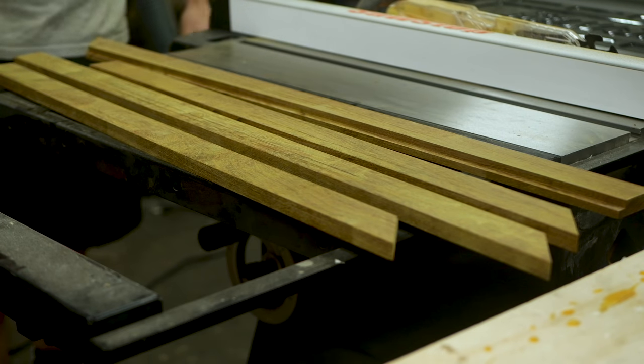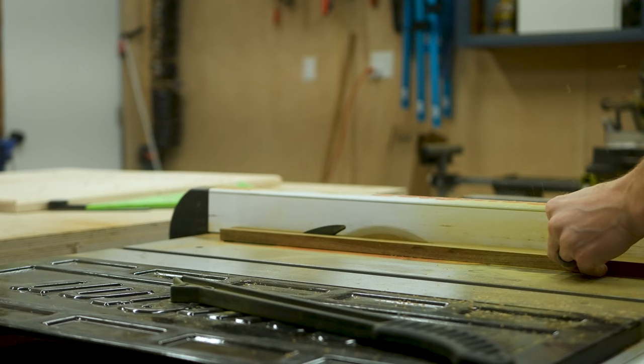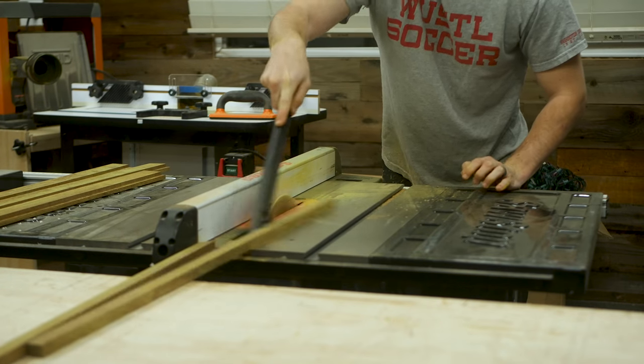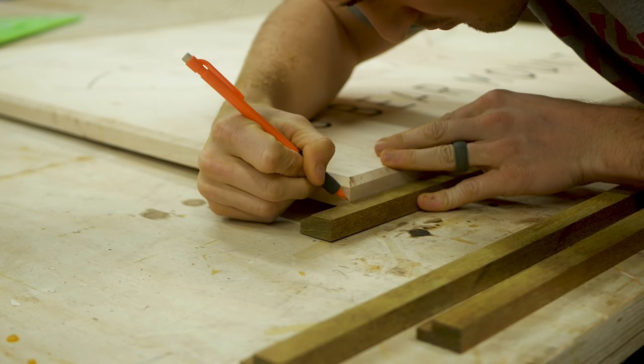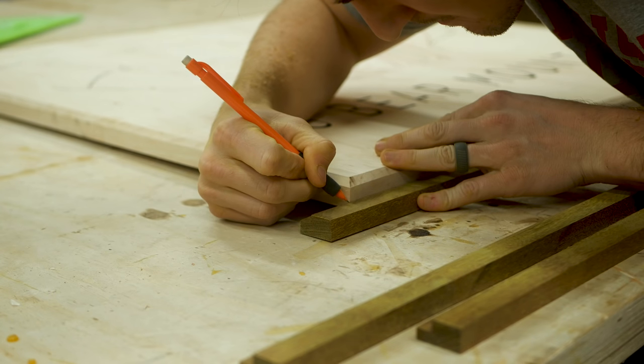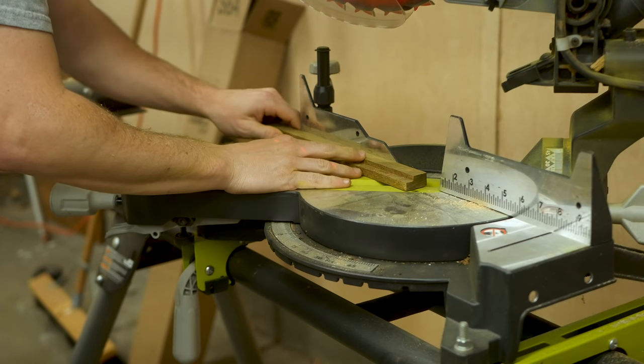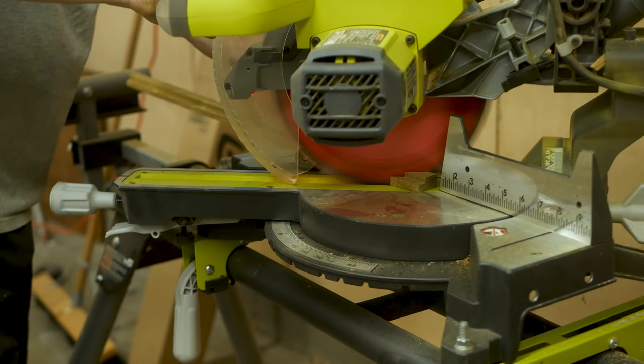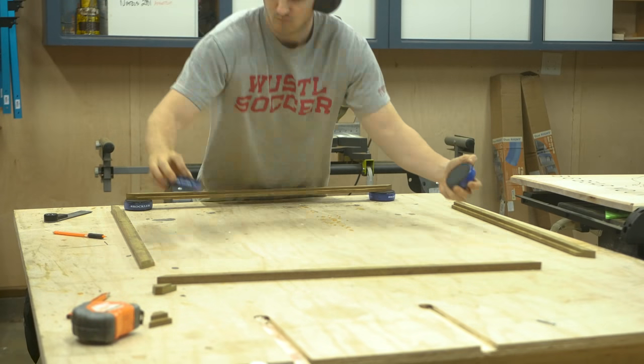So I moved over to the router table and did two passes using a rabbiting bit to create the groove. And I also decided that the border needed to be a much thinner profile so I ripped off another inch or so from each piece at the table saw. Last up was to carefully mark and measure the final lengths of each miter joint and then cut down on the miter saw. Followed by doing a final test fit of everything.